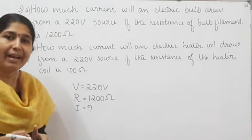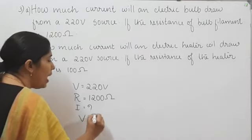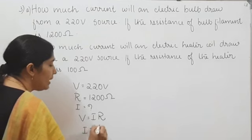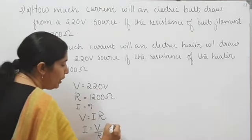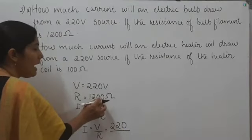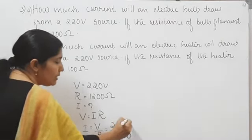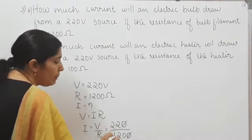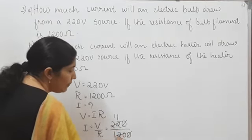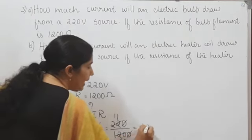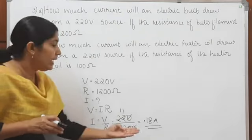According to Ohm's law, V is equal to I into R. Therefore, I is equal to V divided by R, which is 220 divided by 1200. Cancelling zeros gives 22 divided by 120, which further simplifies to 11 divided by 60, giving a value of 0.18 ampere. The current flowing through the bulb filament is 0.18 ampere.